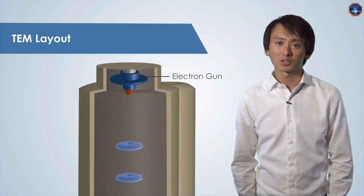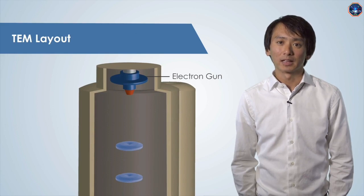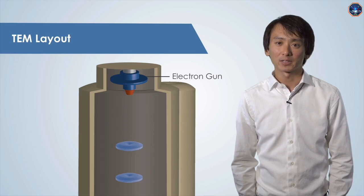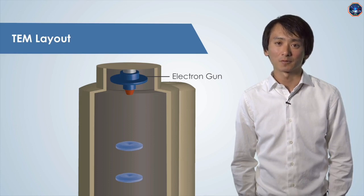With thermionic emission, the electron gun works similarly to an incandescent light bulb. A filament, the cathode, is the source of electrons. It is usually a hairpin-shaped tungsten wire or lab-6 crystal. The filament is heated to a very high temperature and electrons boil off from its tip.